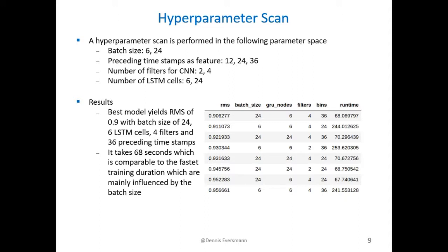After showing that the autoencoder model outperforms the pure vanilla LSTM model, I performed a hyperparameter scan in order to identify the best parameter space for the autoencoder model. It turns out that a model which has a batch size of 24, 6 LSTM cells, 4 filters and 36 preceding timestamps performs best. Especially the runtime is also close to the minimum runtime for the whole parameter space.